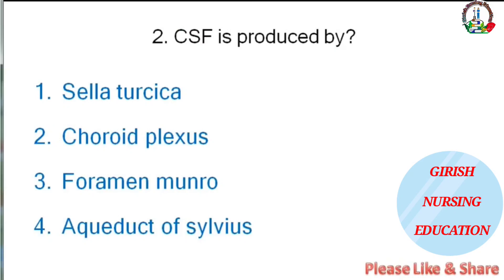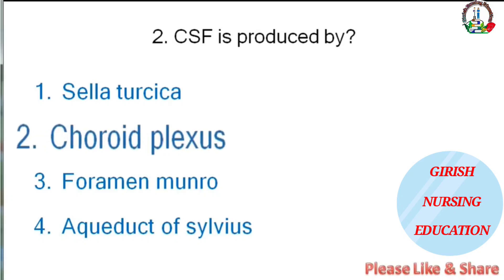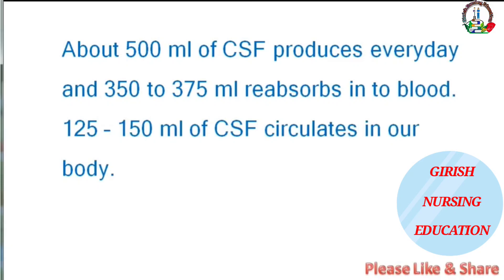CSF is produced by — options are choroid plexus, foramen of Monro, and aqueduct of Sylvius. The correct answer is choroid plexus. About 500 ml of CSF is produced every day and 350–375 ml is reabsorbed into the blood, leaving 125–150 ml circulating in the body.